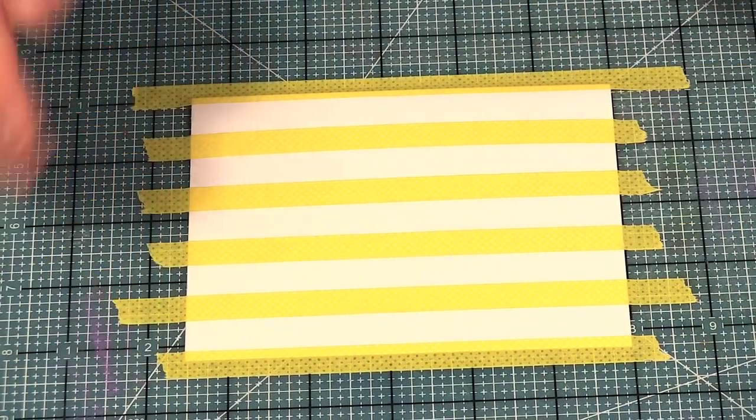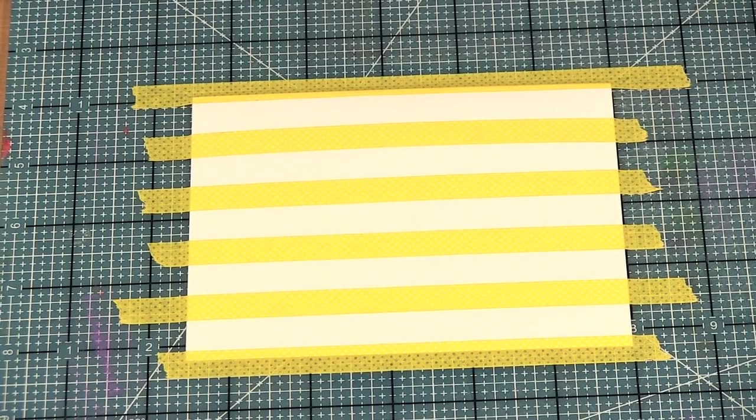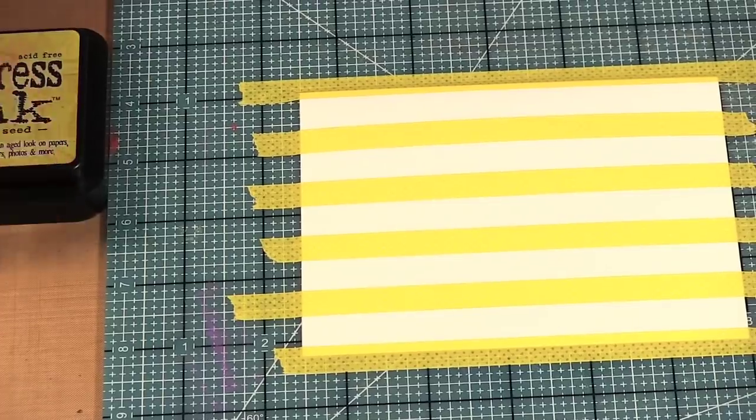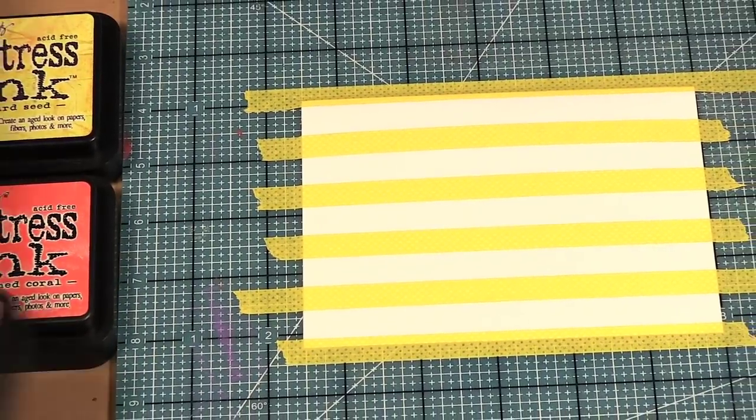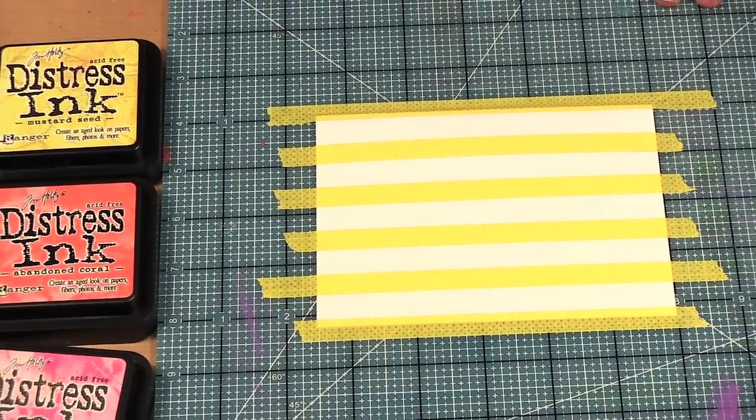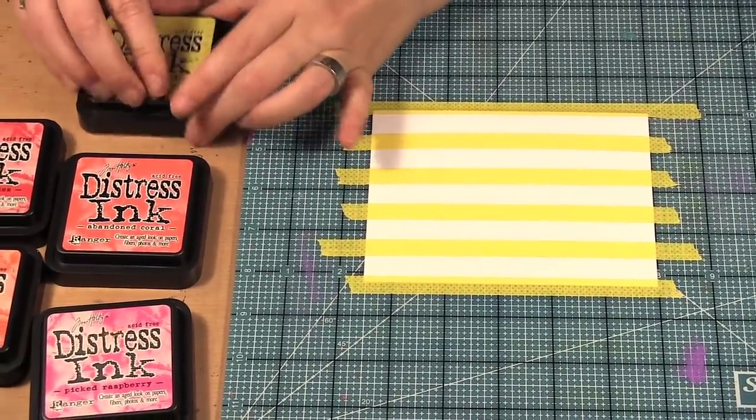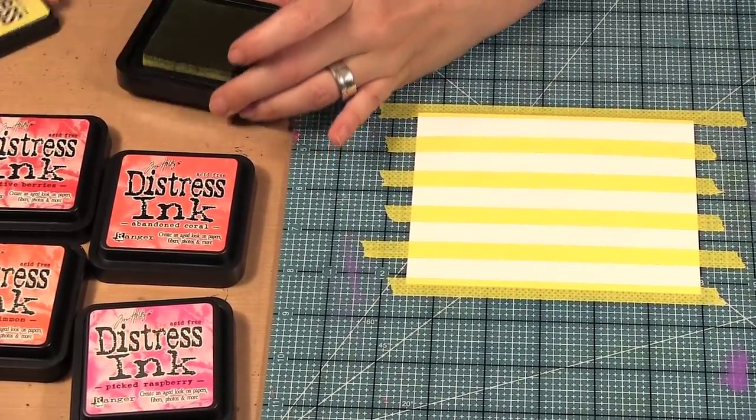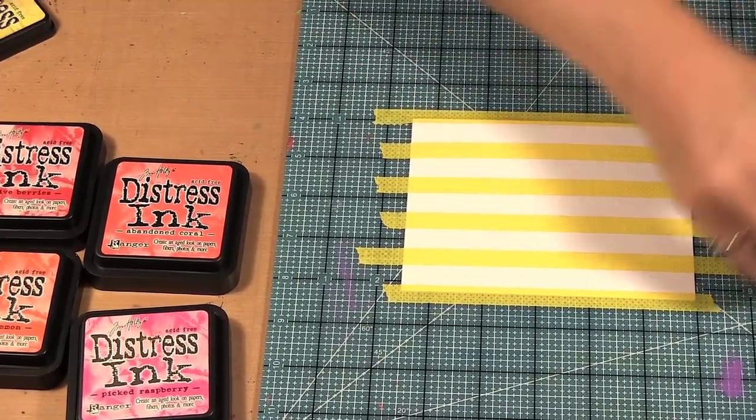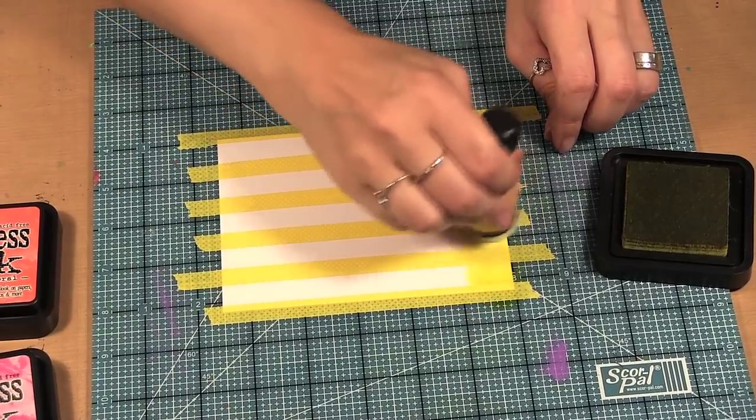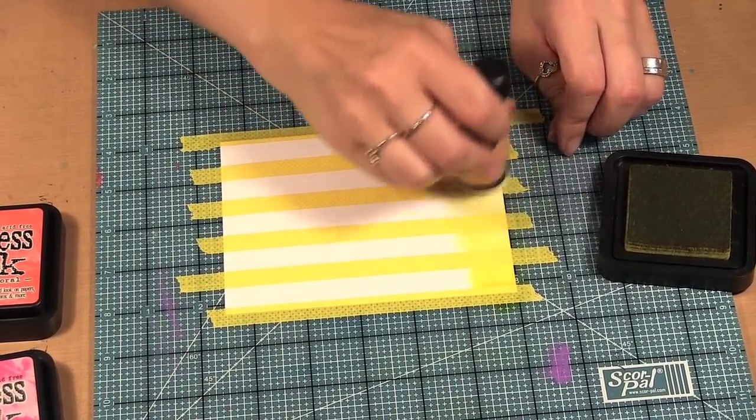So there we have our card all masked off. So I'm going to be doing abandoned coral, picked raspberry, bright persimmon, and festive berries. So I start with my lightest color, which in this case is the mustard seed. I get some ink on there and then I just start at this end putting it on.